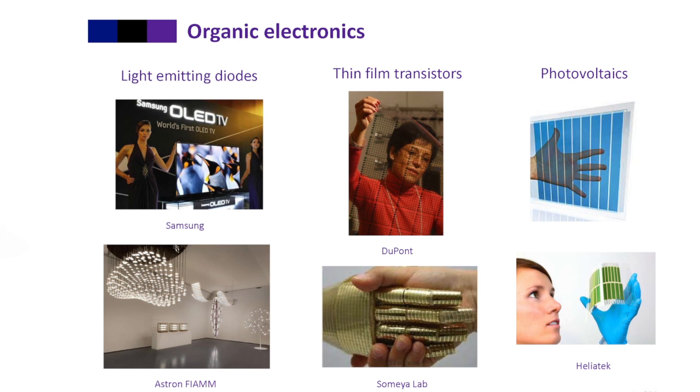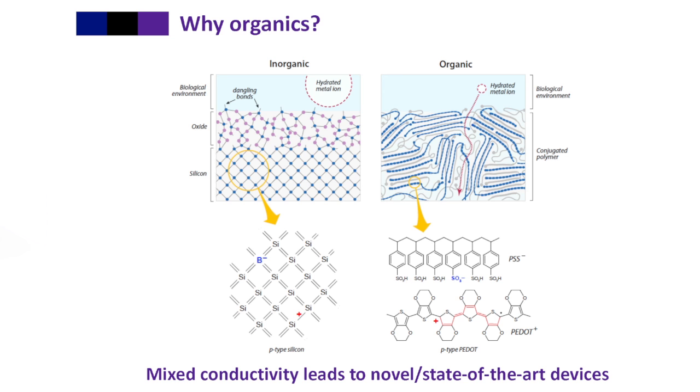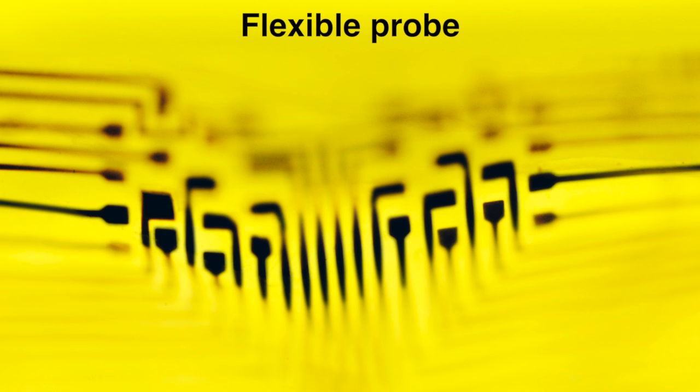Interfacing these two technologies means addressing those mismatches. We use organic electronic materials and devices to bridge that gap. These are carbon-based semiconductors, and one of the big advantages they have is that they can uptake some of the biological media in their structure.